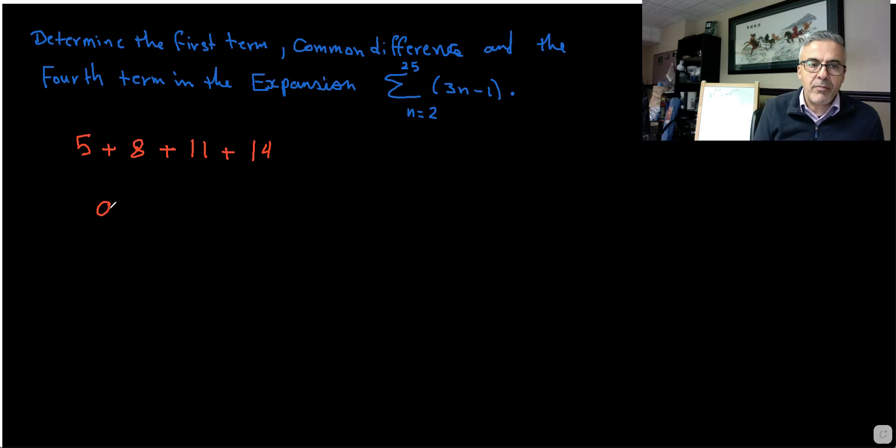So my first term, a, is 5. This is my first term. My common difference is what you're adding every time is 3. And my T4 is 14, my fourth term.